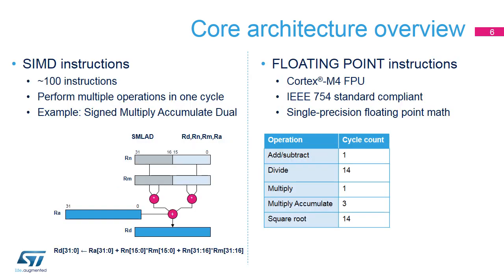SIMD techniques operate with packed data. For instance, two 12-bit samples acquired with the ADC can be stored in the two half-words of the same 32-bit register. In the example described in this slide, two pairs of samples are multiplied and then accumulated into a destination register. Since data signal processing is based on sums of products, SIMD instructions contribute to increasing performance with regard to regular scalar fixed-point instructions.